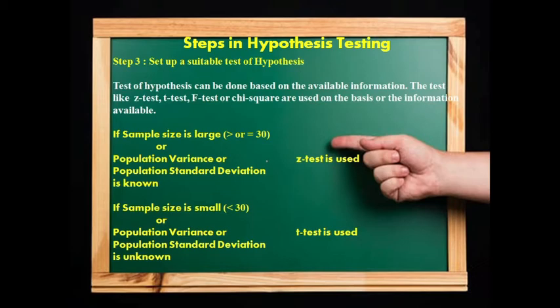Now we come to Step 3: Set up a suitable test of hypothesis. In Step 3, we set up and decide which test to use. The test of hypothesis can be done on the basis of available information. Tests like Z-test, T-test, F-test, or Chi-square test are used depending on the information available. Based on the available information, we decide which test to use.